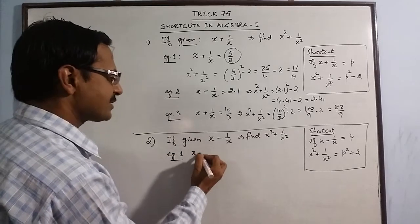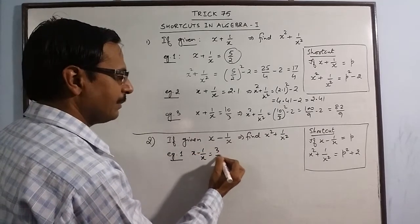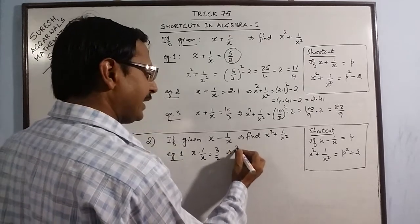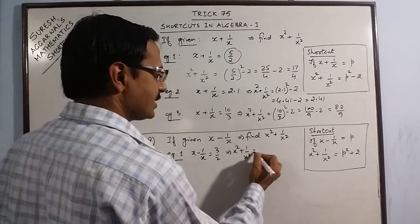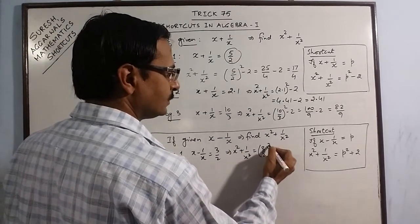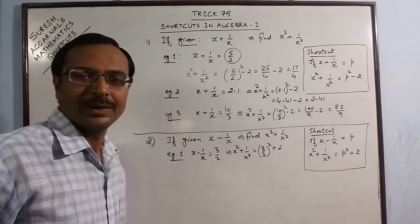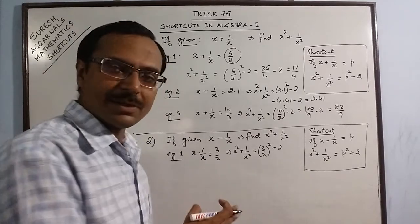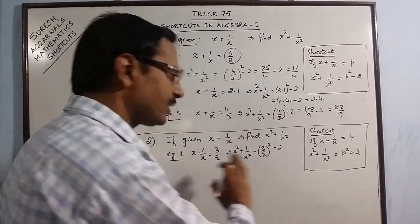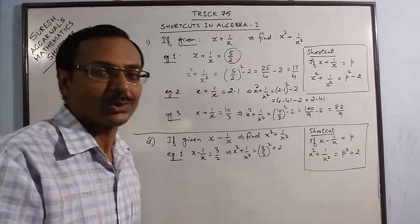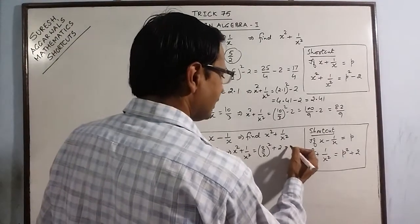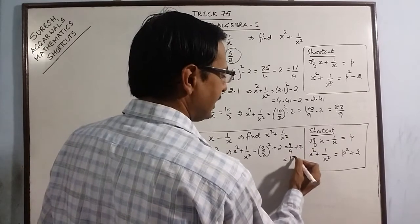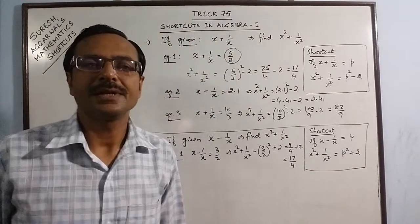Say, we are given the value of x minus 1 by x as 3 by 2. For finding x squared plus 1 over x squared, just square 3 by 2 and add 2. You can do this orally also. You do not need to write this step. Once you practice the method, you can solve all the steps orally. This is 9 upon 4 plus 2, which is 17 upon 4.